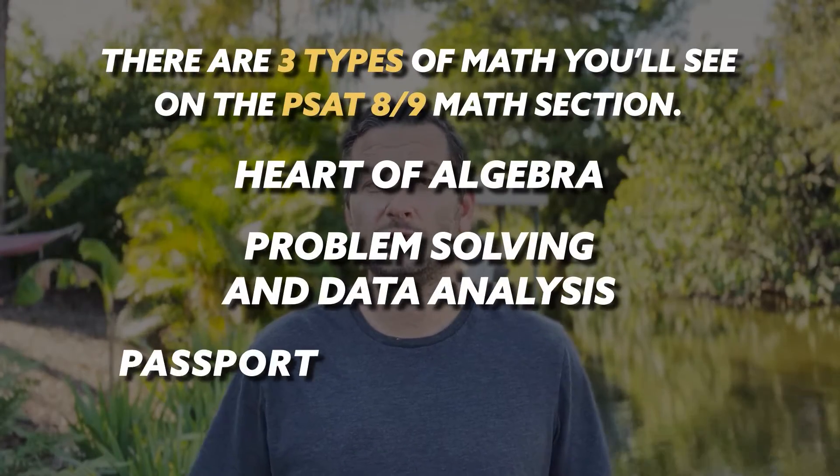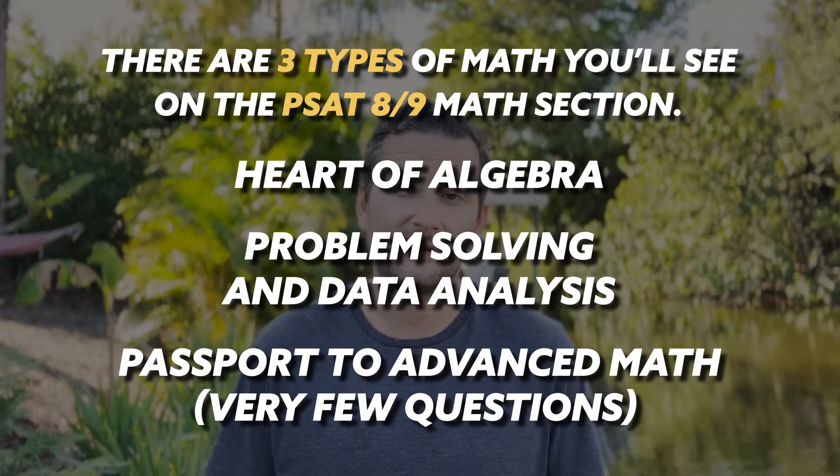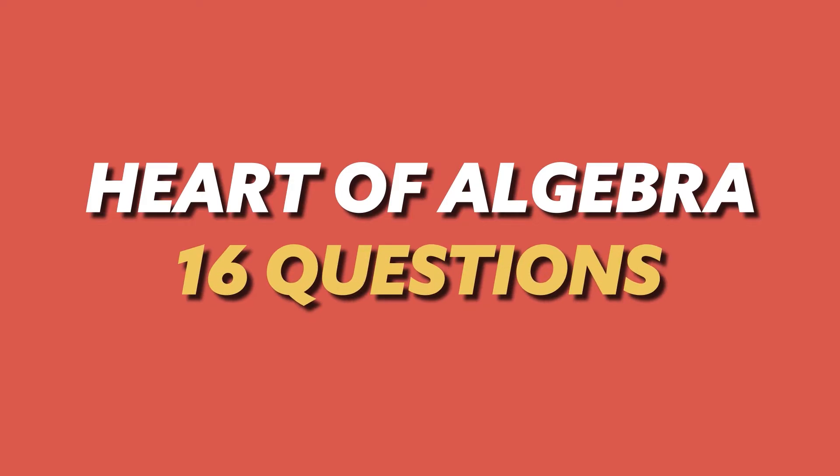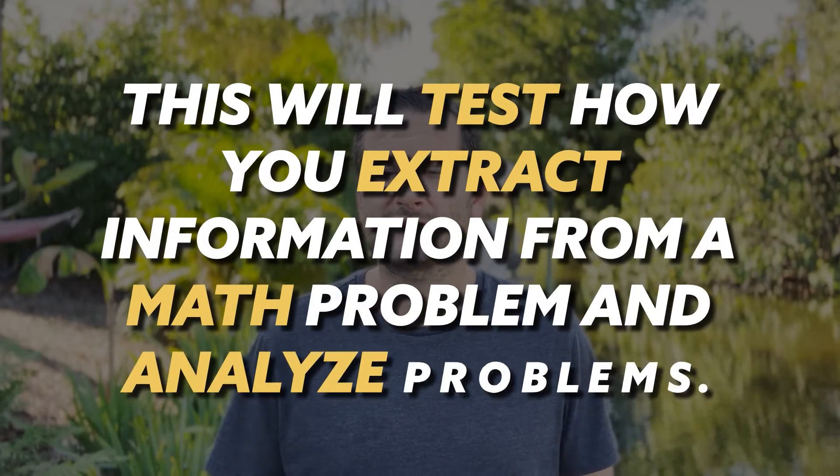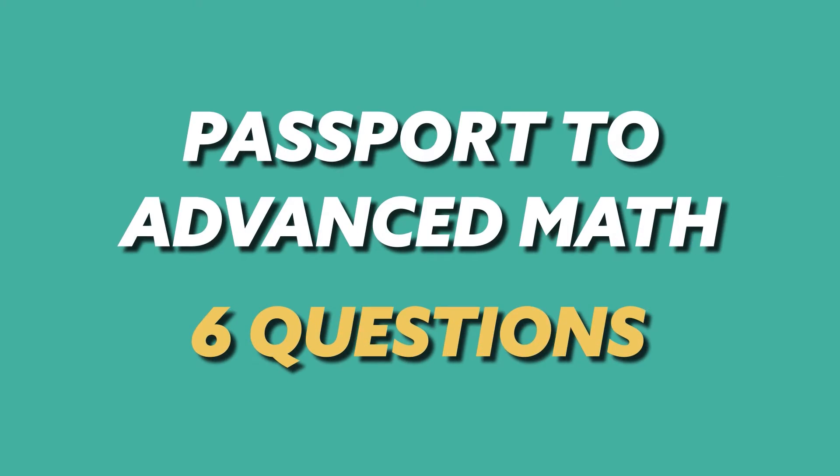The Math section covers two main topics plus a third that's just a few questions. The first is the Heart of Algebra, which tests your mastery of linear equations and systems — about 16 questions. The second is Problem Solving and Data Analysis, also about 16 questions. The third is called Passport to Advanced Math, which covers more complex equations and will only be about six questions.